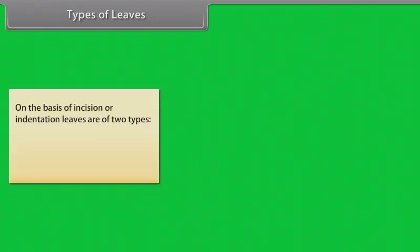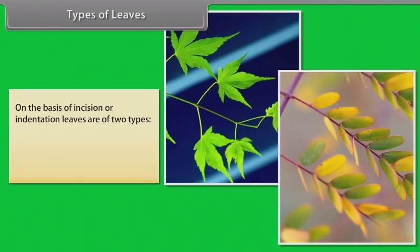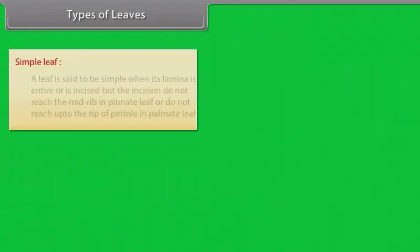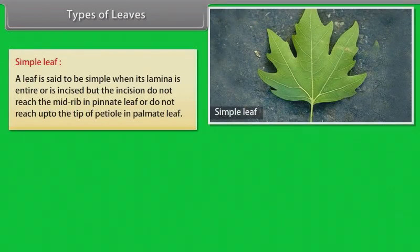Types of Leaves: On the basis of incision or indentation, leaves are of two types: simple leaf and compound leaf. Simple leaf: A leaf is said to be simple when its lamina is entire or is incised, but the incision does not reach the mid-rib in pinnate leaf or does not reach up to the tip of petiole in palmate leaf.